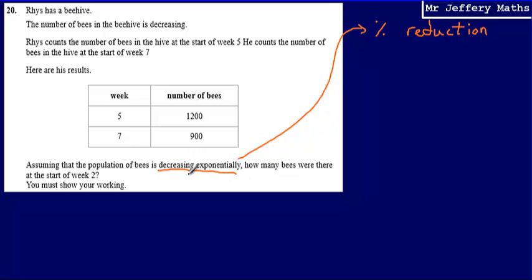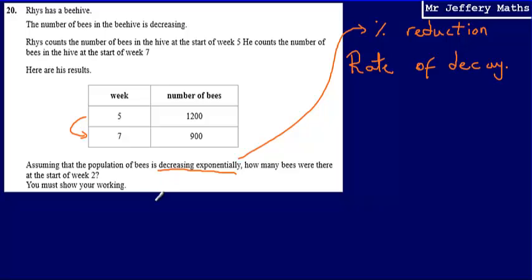This is exponential decay, and I need to figure out what the rate of decay is. I could work out the rate of decay over the two-week period, but the problem is I need the number of bees at the start of week 2. Working back from weeks 5 and 7 by two-week steps would give me weeks 3 and 1, skipping week 2. So instead, I'm going to find the rate of decay over a one-week period.